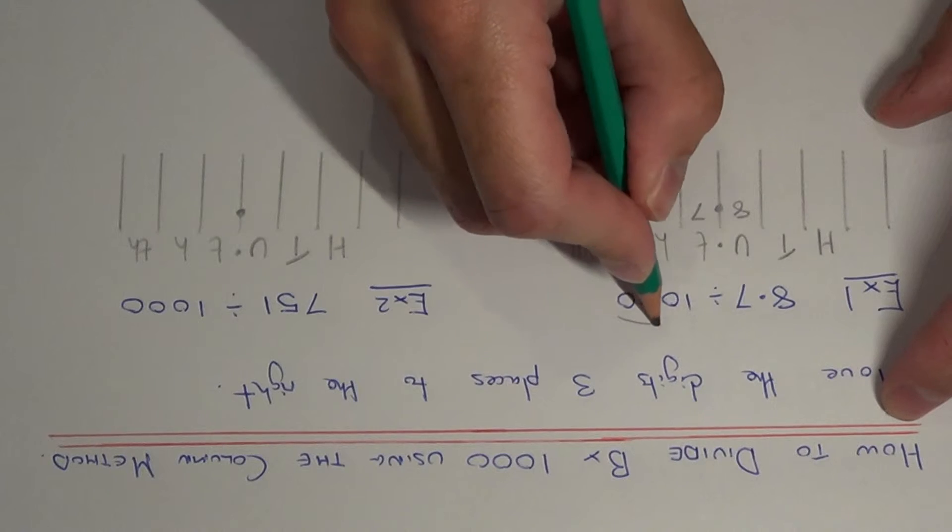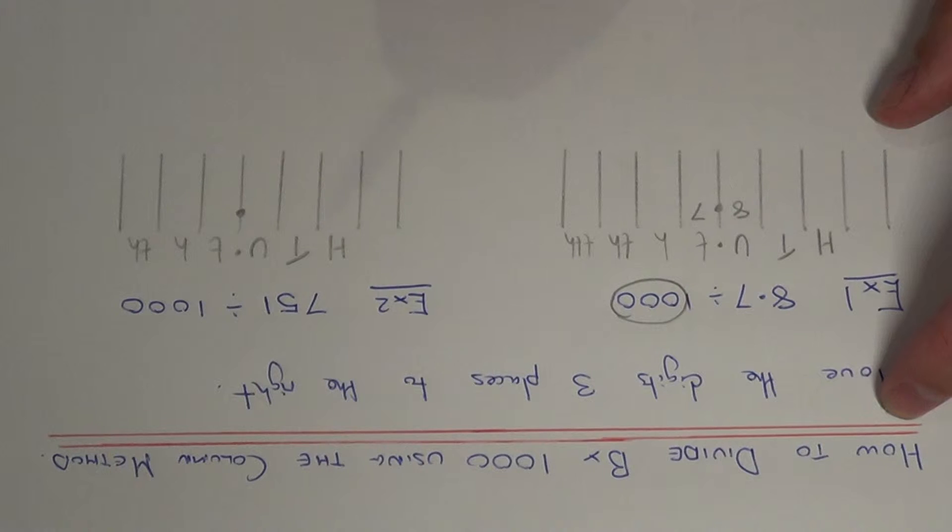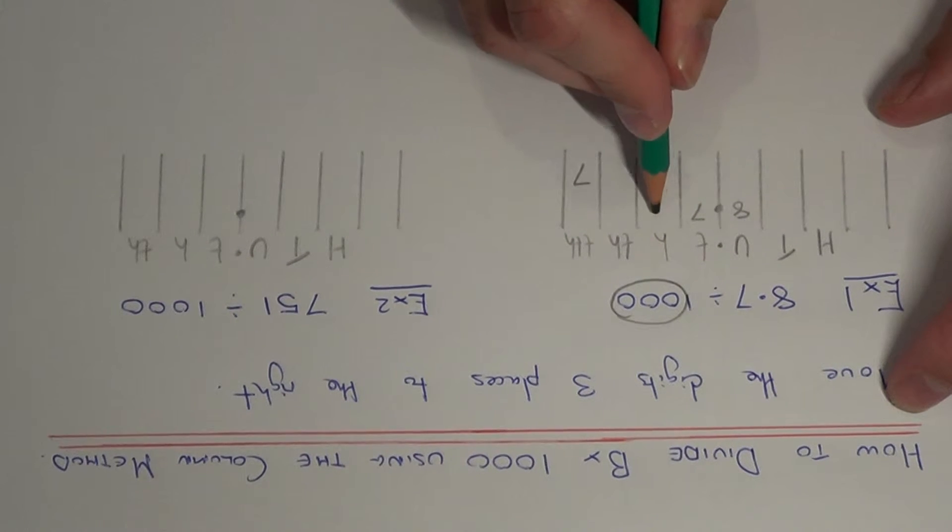So since we divided by a thousand, we move the digits three places to the right. So the 7 goes 1, 2, 3 and the 8 goes 1, 2, 3.